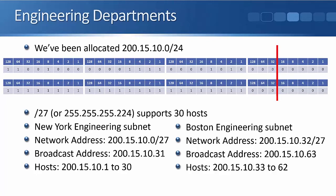Now we actually divide up our address space. Headquarters is in New York so let's give them the first subnet. The network address is 200.15.10.0/27. Looking at the subnet line, it's after 32, so a /27 goes up in increments of 32. The next network address will be 200.15.10.32, which means the first subnet's broadcast address is one less: 200.15.10.31. That leaves host addresses available from 200.15.10.1 up to .30.